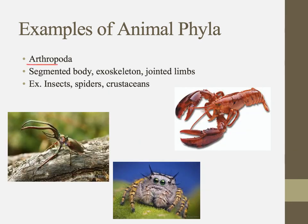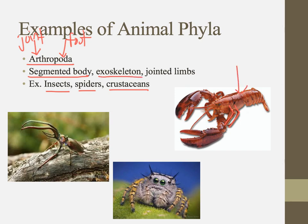The arthropods win the award for most numerous animal on the planet — more arthropods exist than any other phylum. This includes all the insects, spiders, and crustaceans. "Arthro" literally means joint and "pod" means foot, so these are all things with jointed feet. They have a segmented body — you'll notice things like a head, abdomen, and thorax. They have exoskeletons, wearing their skeleton on the outside like a shell, and of course jointed limbs.